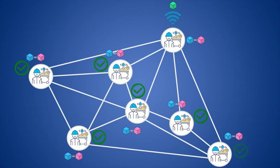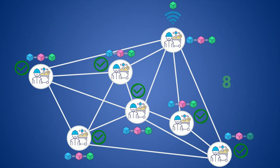This is also a guarantee of the unchangeability of the blockchain itself, because in order to modify one or more transactions, it would be necessary not only to modify all subsequent blocks up to the current one, but also to modify them in the majority of copies of the existing blockchain — therefore requiring control of 51 percent of nodes.